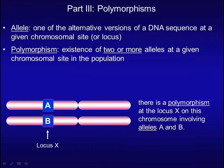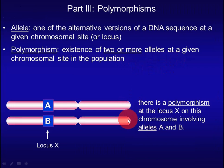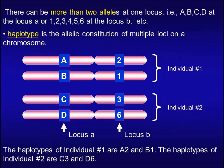Allele refers to one of the alternative versions of the DNA sequence at a given chromosome site. Polymorphism refers to the existence of two or more alleles at a given chromosome site in the population. For example, at locus X there are two different versions of DNA sequence — allele A and allele B. There can be more than two alleles in a population at a given locus; for example, four different alleles at locus A and six different alleles at locus B.